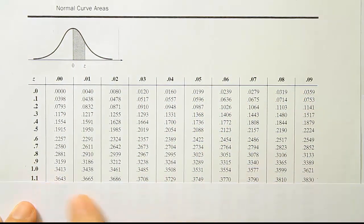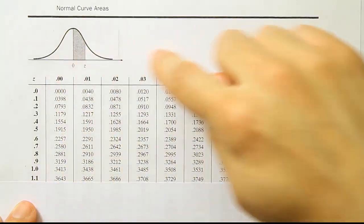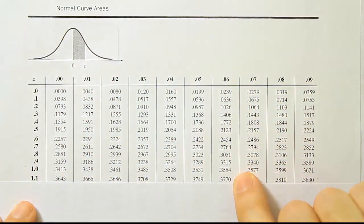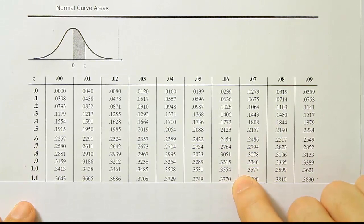So 1.16, right? 1.1, and then over here to where we see the 6. And we get the answer .3770.